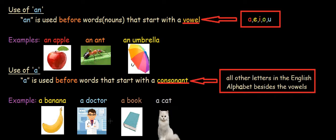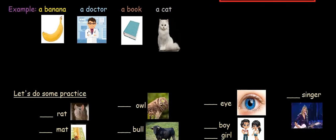So, we utilize the an article before words that start with a vowel. And we use a before words that start with a consonant. So, keeping this in mind, let's move on to the next part.